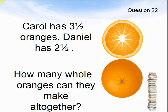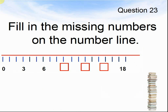Here comes question 23. Fill in the missing numbers on the number line: 0, 3, 6, something, something, something, 18. Pause the video until you are ready for the next question.